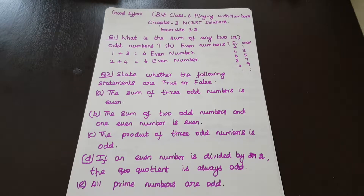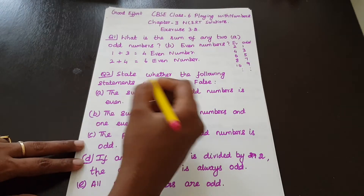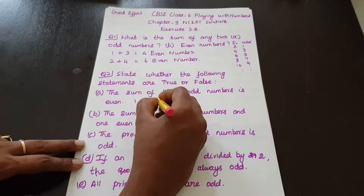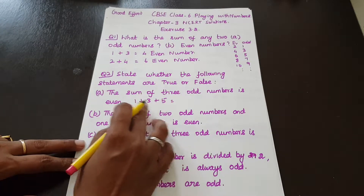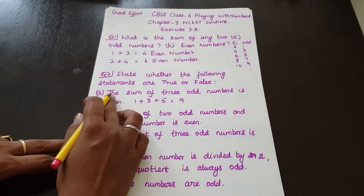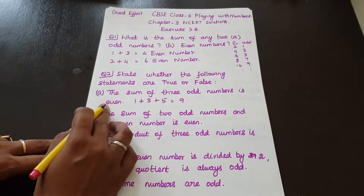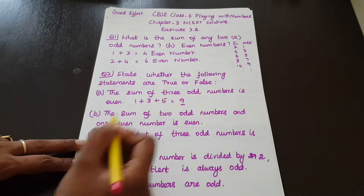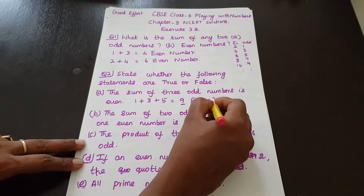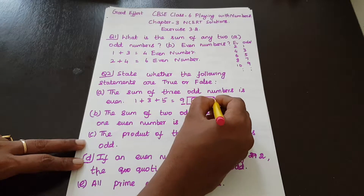Question No. 2: State whether the following statements are true or false. Statement: The sum of 3 odd numbers is even. So, 3 odd numbers: 1 plus 3 plus 5. That is 1 plus 3 equals 4, and 4 plus 5 equals 9. So the sum is 9, which is odd. Therefore, the statement is false.